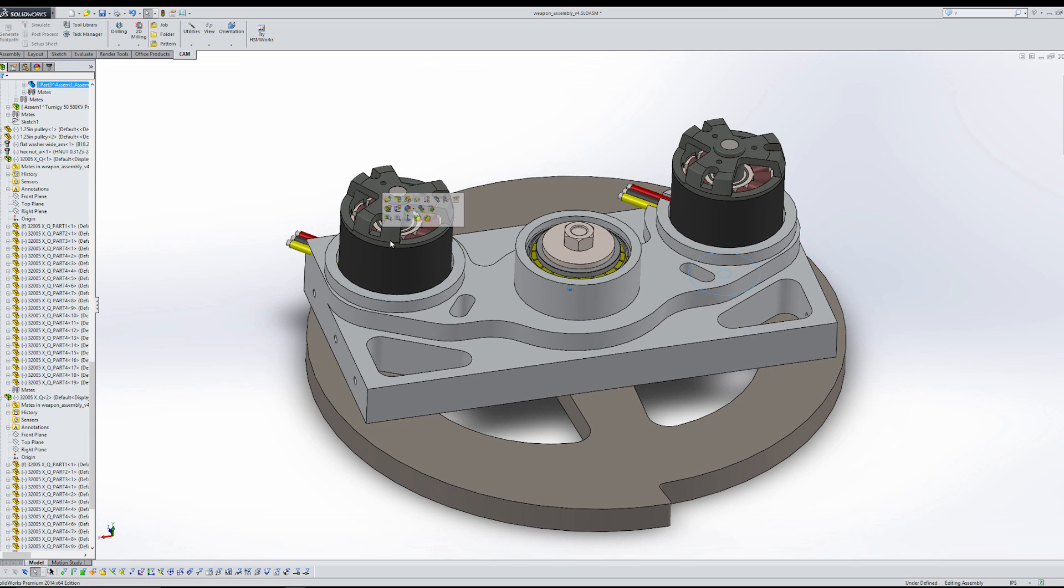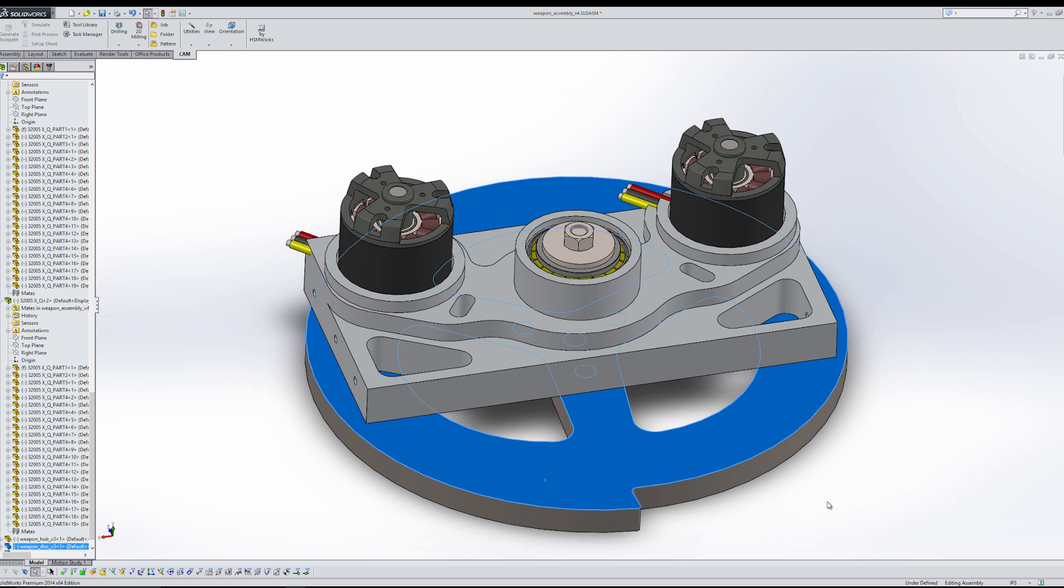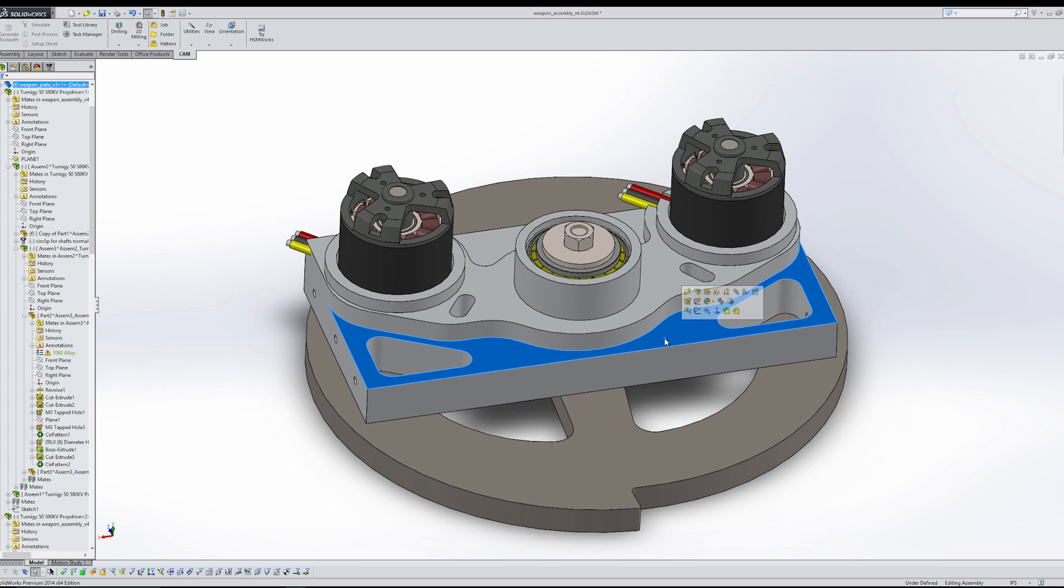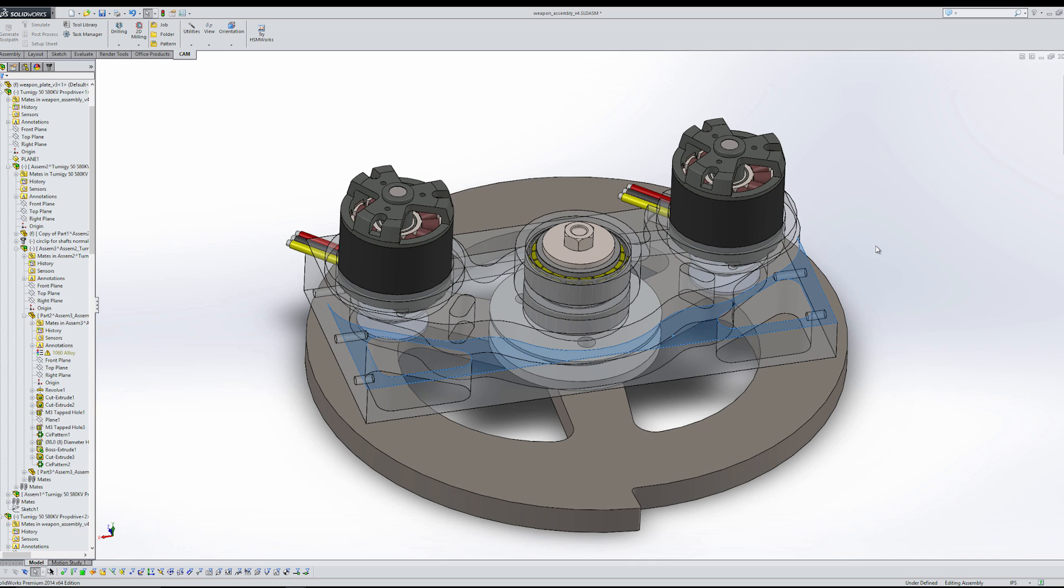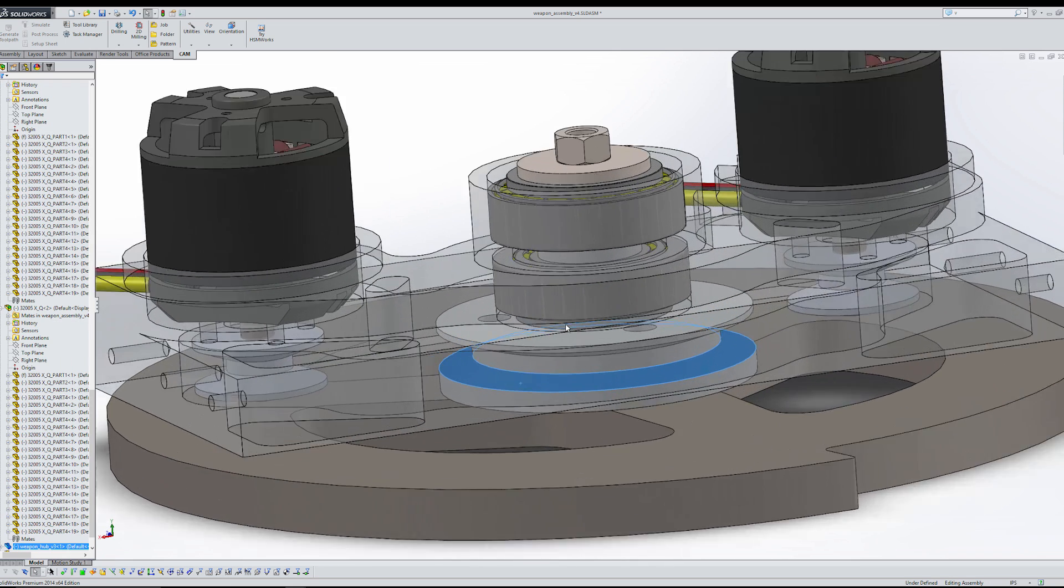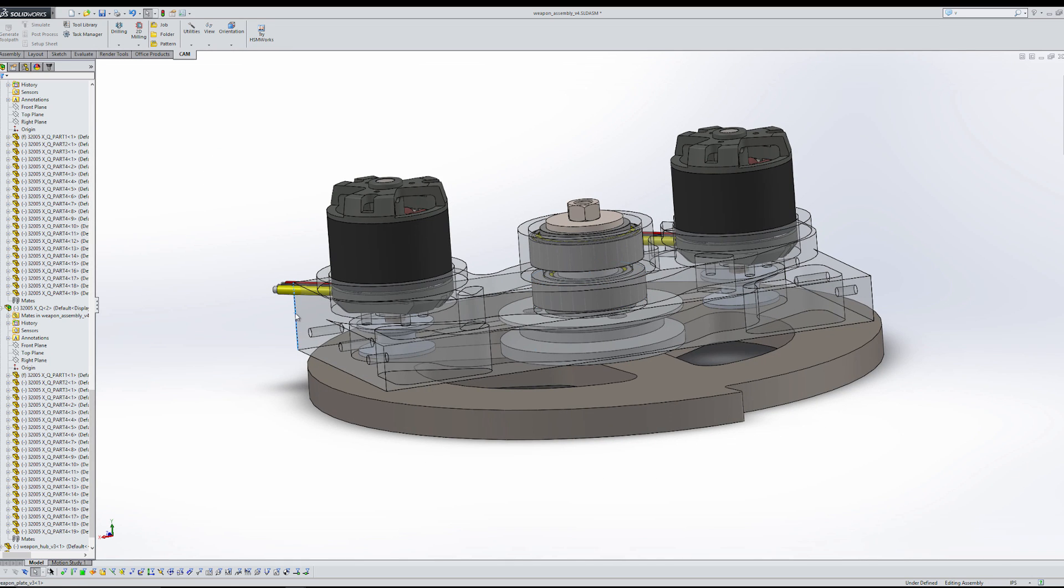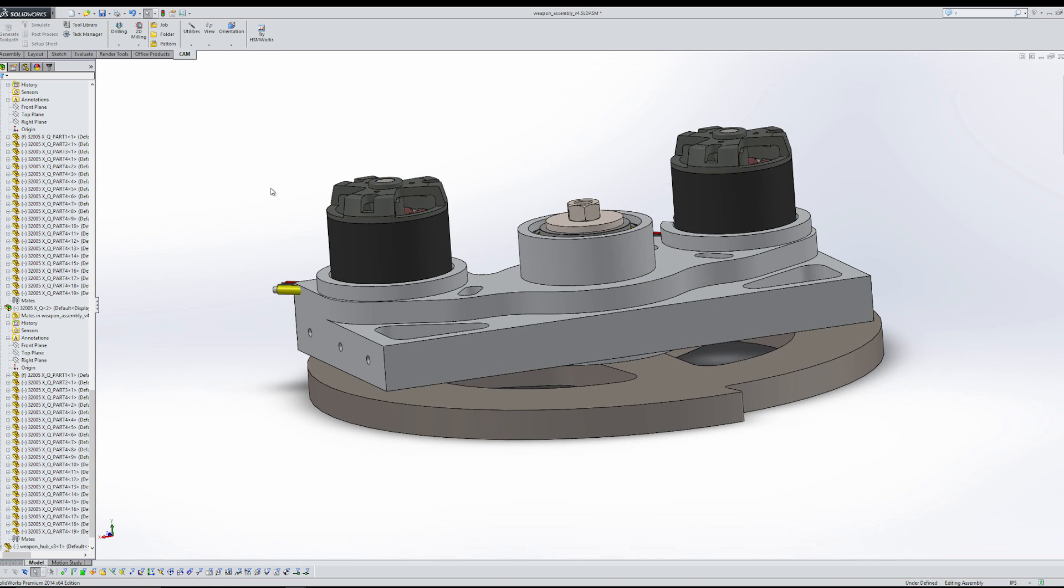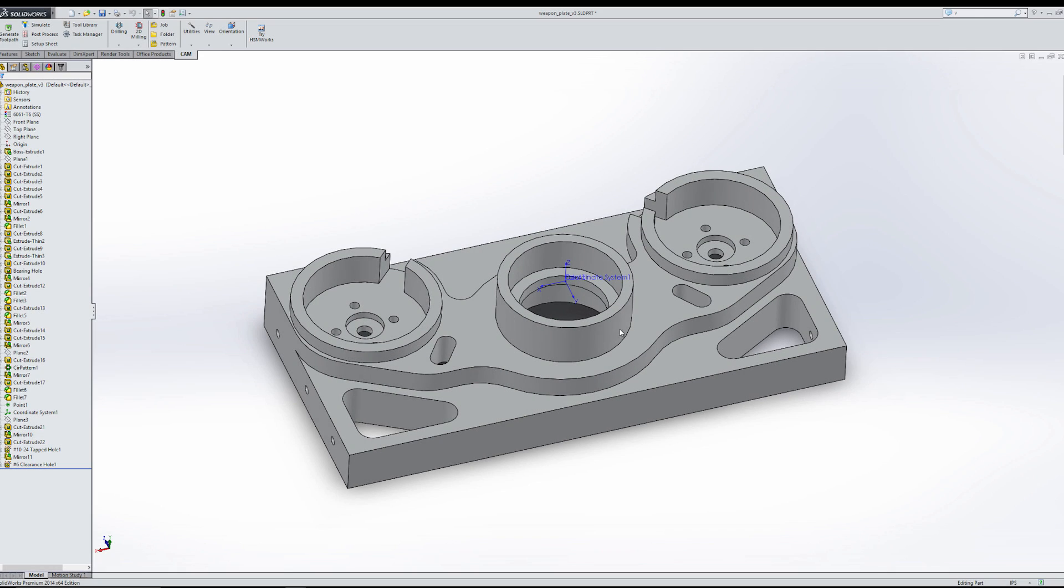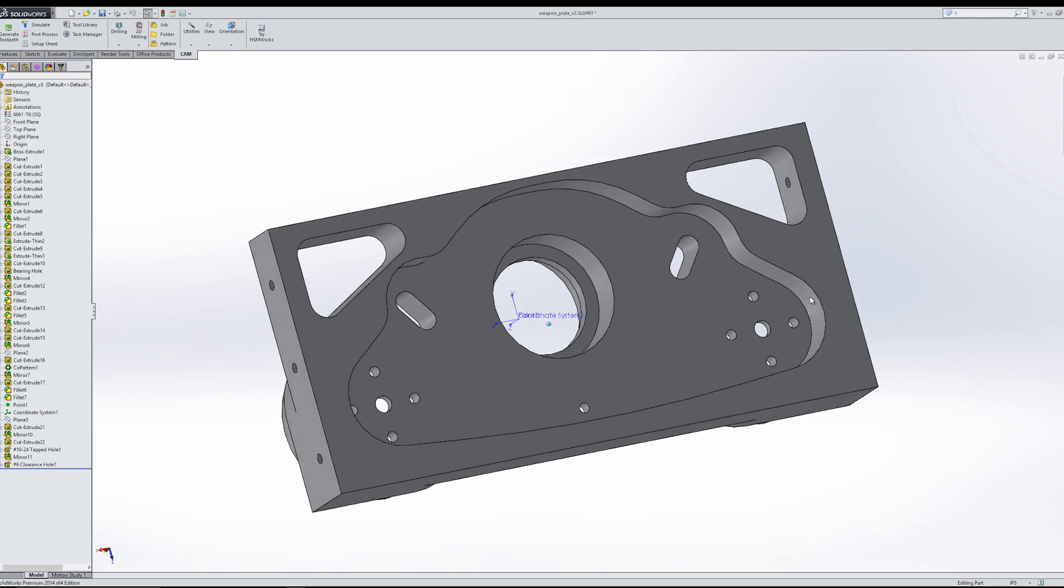Up top we've got the two motors that spin the pulleys and then spin the weapon itself, and then the drive block. The drive block is what I'll be making in this video. If we make it transparent, you can see the hub down here at the bottom, and then these two tapered roller bearings that get pressed into the weapon block. If we look at the part by itself, you can see that it's relatively complicated with a lot of various features.